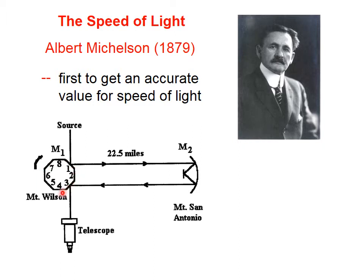This was made to rotate, and it turns out that there are only certain rotational rates that would allow the light source to be seen through the telescope. If this isn't rotating at the proper rate, then you wouldn't see the light through this telescope, because the light wouldn't hit these mirrors exactly as shown in this picture.